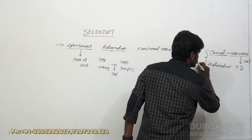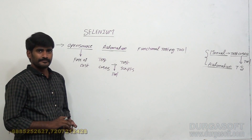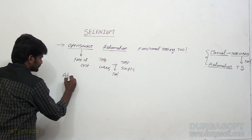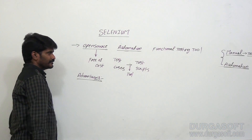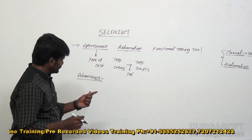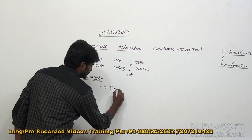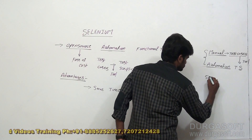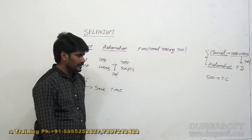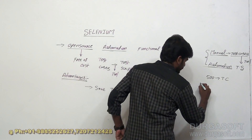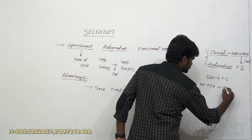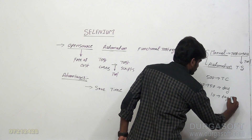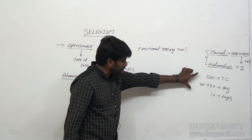Now my question: manual testing is already there — why are we going for automation? Is there any advantage? Yes, in automation there are some advantages. The main one is we can save time. In manual testing, suppose there are 500 test cases. I want to execute all 500 on the application. On average I can execute 40 to 50 per day, so it will take maximum 9 to 10 days to execute all 500 test cases.